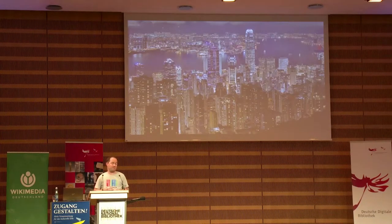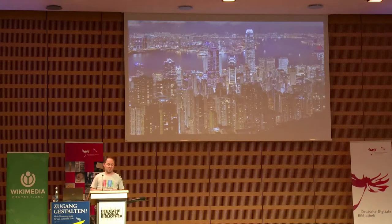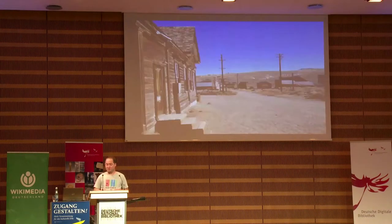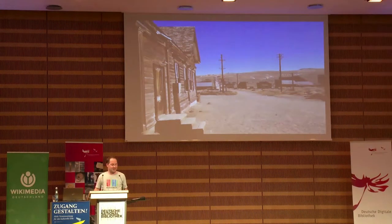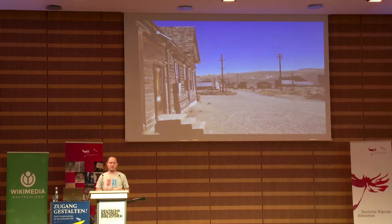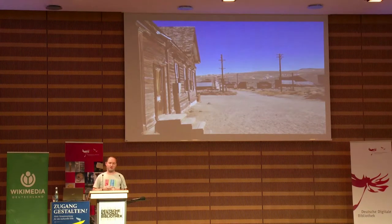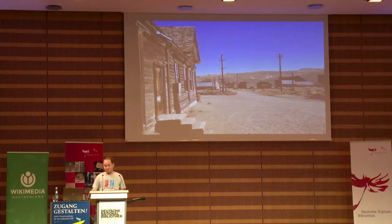Locations: we have from really big cities — this is Hong Kong — about 2 million locations on Earth, down to the smallest places. This is a ghost town somewhere in California called Bodie. If you ever come to California, you should visit it. If you look at the map of items we have, most location items have coordinates. You do see it's very Western-oriented — Western Europe is completely bright, the US coasts are completely bright. But if you look at Asia or Africa, there are still huge gaps, places we haven't described yet. So there's plenty of work to do there.